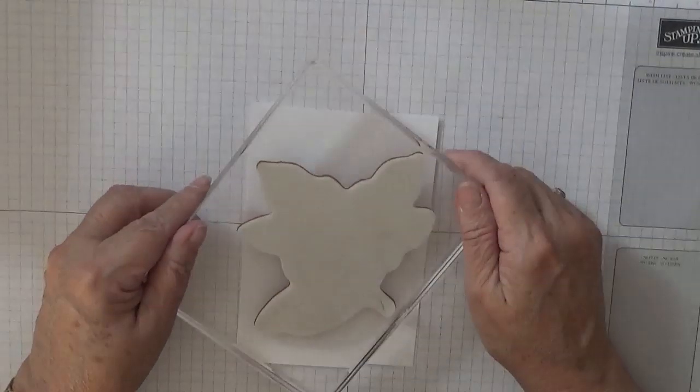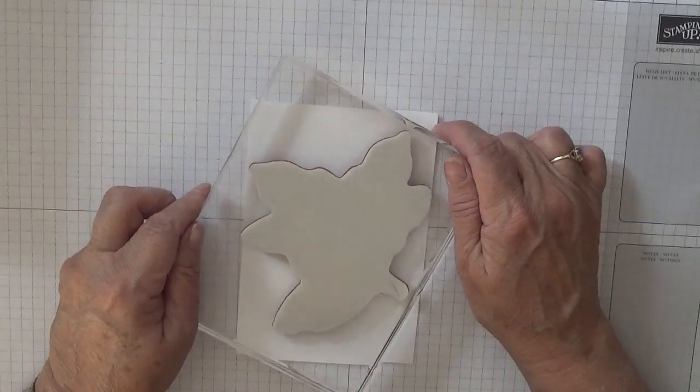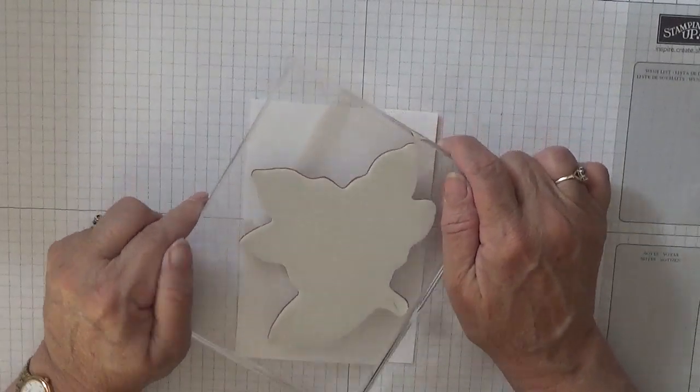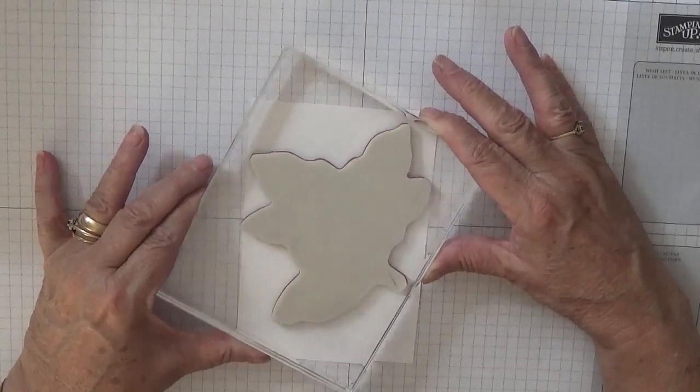So to get started, we need one of these, the stamp, and the black ink. And this I am going to stamp just—your knuckles are in the way—there.